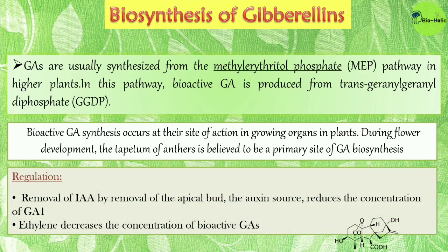Regarding regulation of gibberellin biosynthesis: removal of indole-3-acetic acid by removal of the apical bud, the auxin source, reduces the concentration of GA1, and ethylene decreases the concentration of bioactive gibberellins.